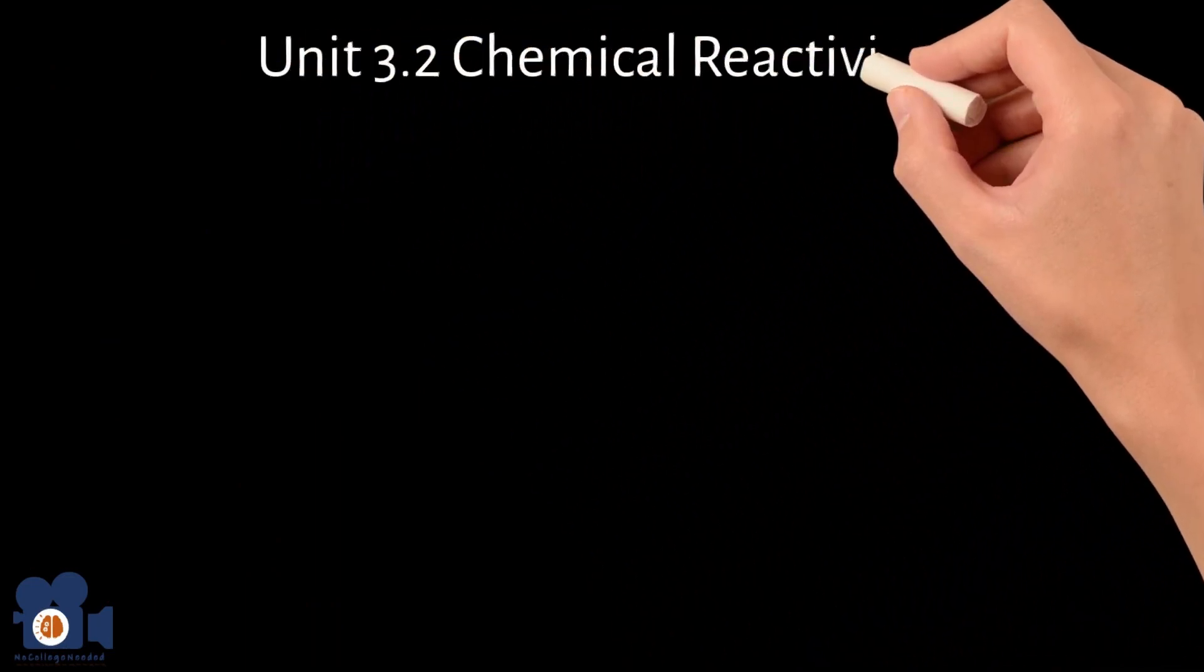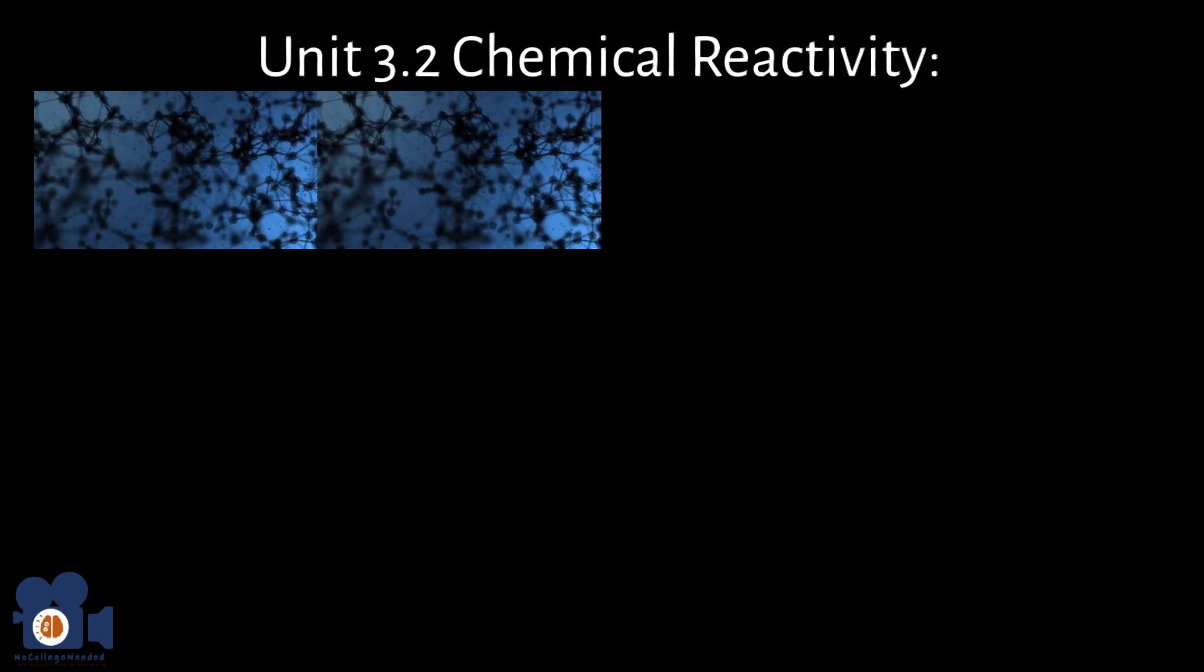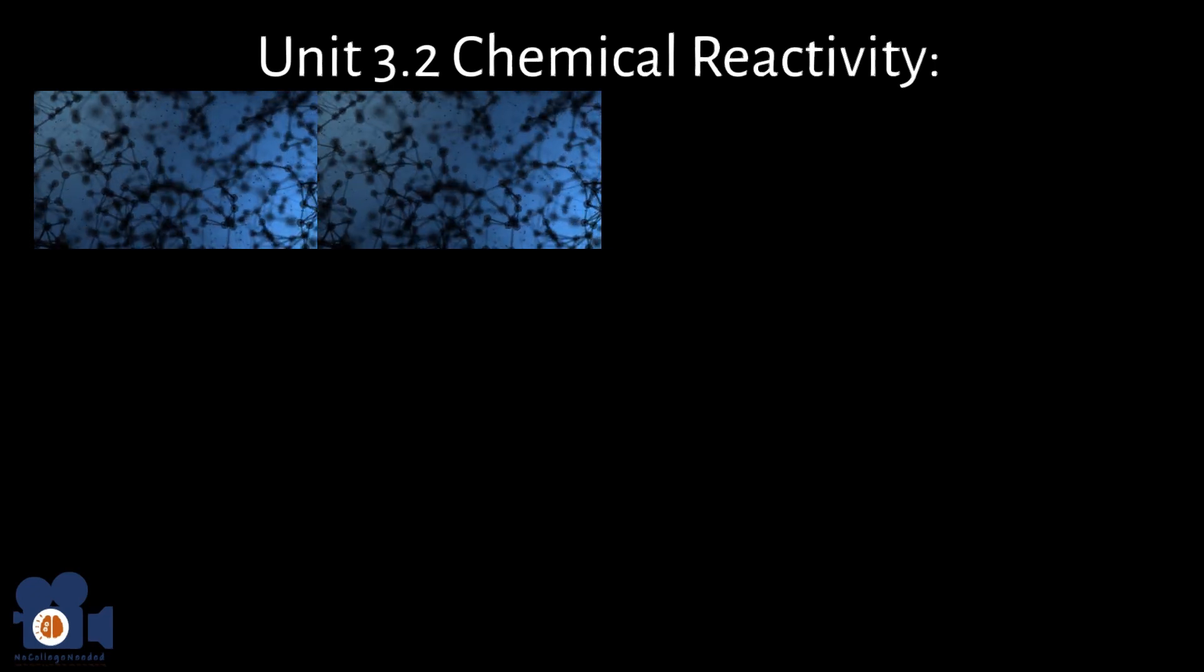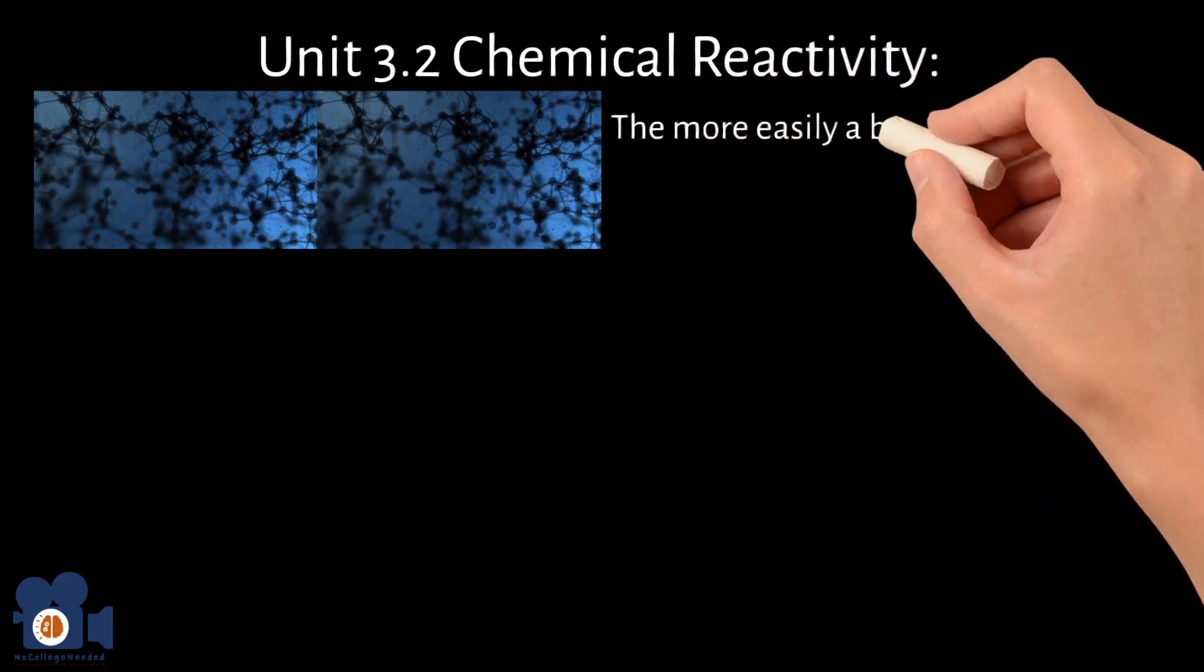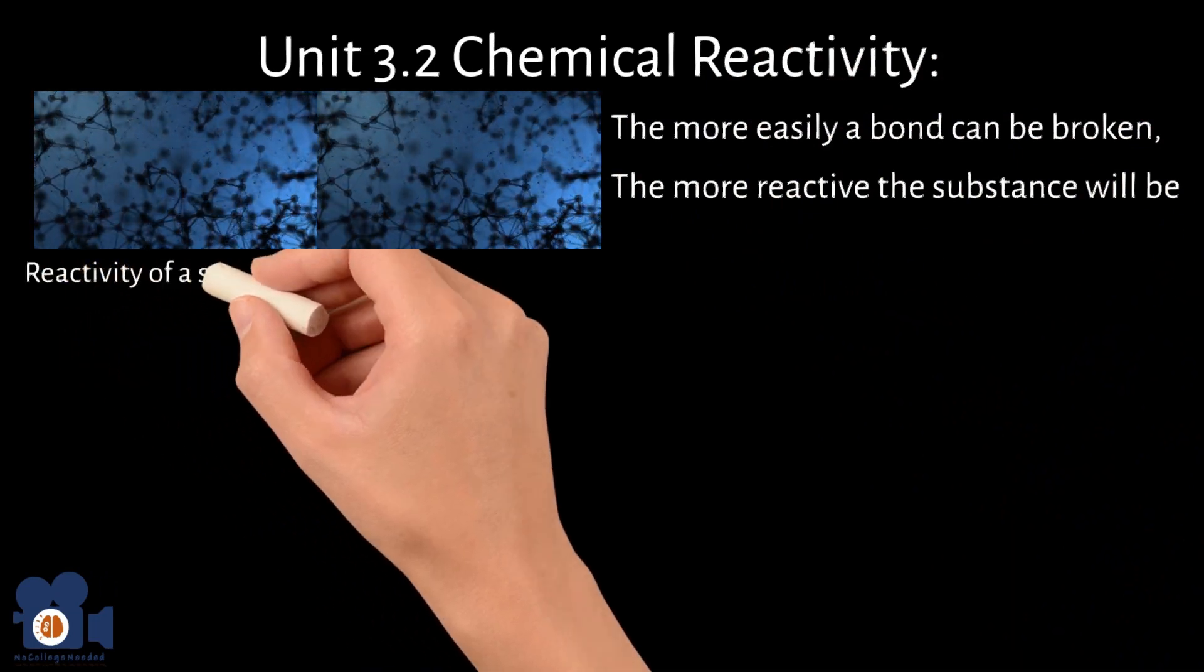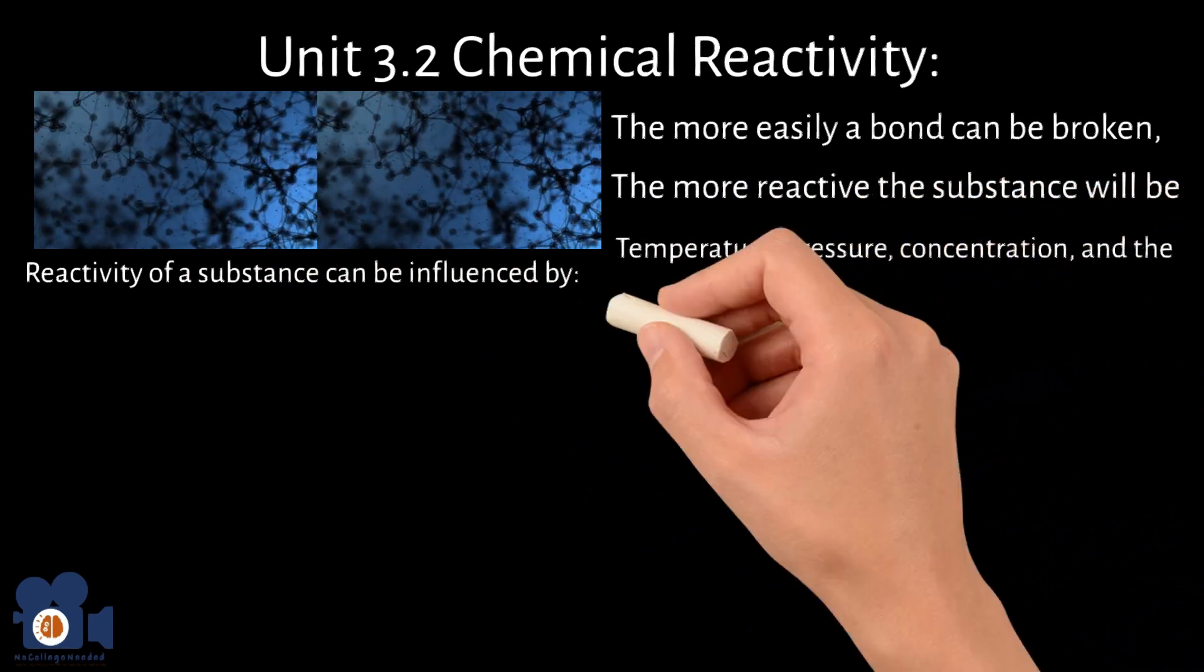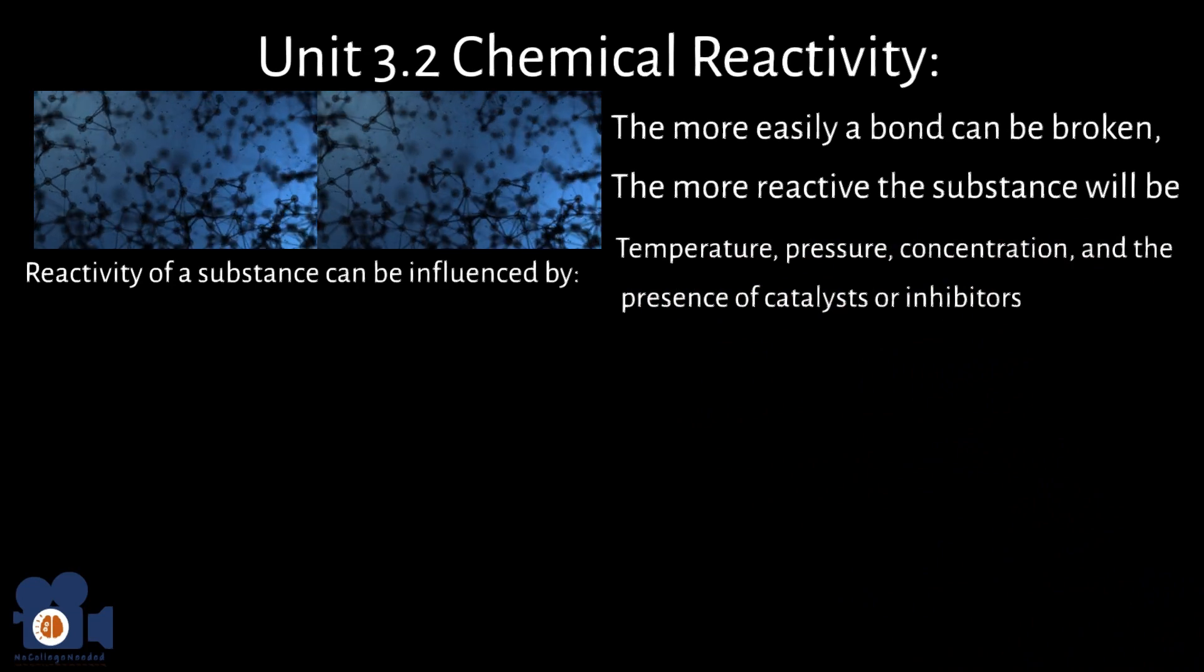Unit 3.2: Chemical Reactivity. Chemical reactivity is determined by the nature of a chemical substance's bonds and the electron configuration of its atoms or molecules, allowing it to undergo chemical reactions with other substances. In general, the more easily a bond can be broken, the more reactive the substance will be. The reactivity of a substance can be influenced by a number of factors, including temperature, pressure, concentration, and the presence of catalysts or inhibitors.